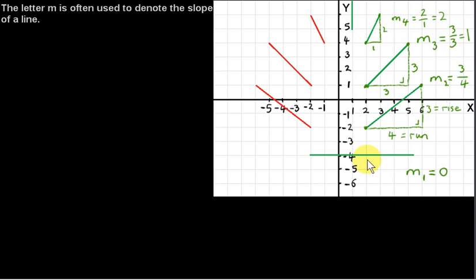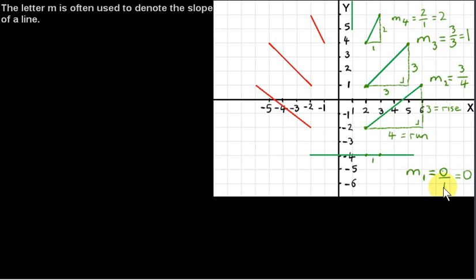So you can see what's happening here — the lines have increasing slope. We started off with a slope of zero. If we calculate rise over run for the horizontal line, we can pick any two points on it. The vertical distance between those points — the rise — is zero. The run is one, so we have zero divided by one, which is zero. Zero divided by any non-zero number is zero. So it's true for any horizontal line: the slope is zero.